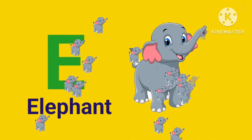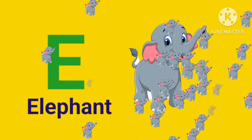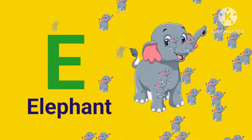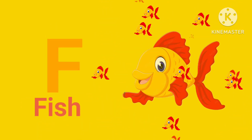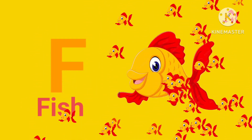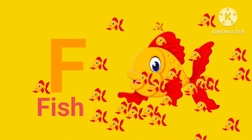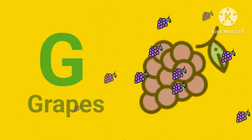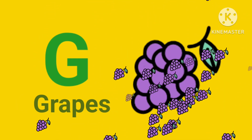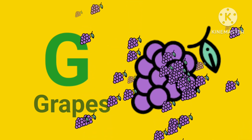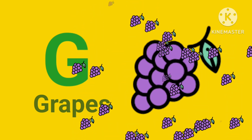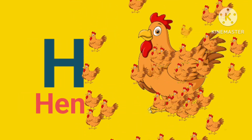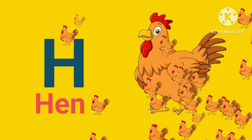E for elephant. F for fish. G for grapes. H for hen.